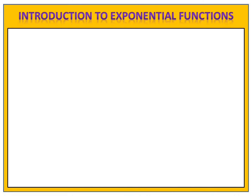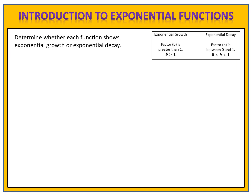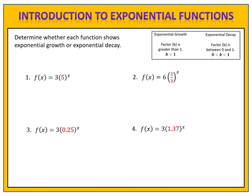Let's take a look at four functions. For each of these functions, can you determine whether the function shows growth or decay? Remember, to determine whether a function shows growth or decay, we're simply looking at the b-value or the factor. If the factor is greater than 1, we have exponential growth. If the factor is between 0 and 1, we have exponential decay. Please pause the video here and come back when you're ready to compare answers.